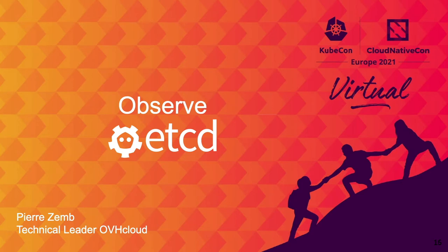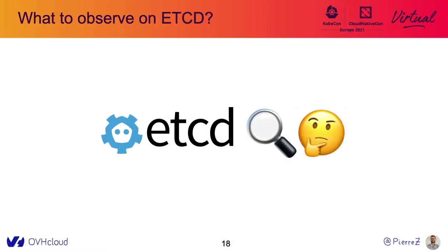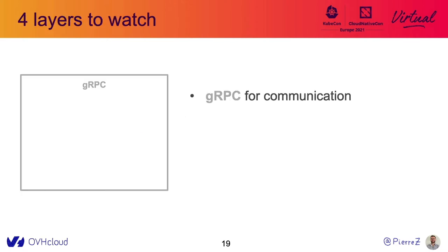First, I want to speak about observability. There are two flags that you need to enable on each member of the etcd cluster: the first one is about metrics, to gather as many metrics as possible, and the second one is related to the logger to have all the traces that we need to debug in production. From an SRE point of view, we can divide etcd into four layers.